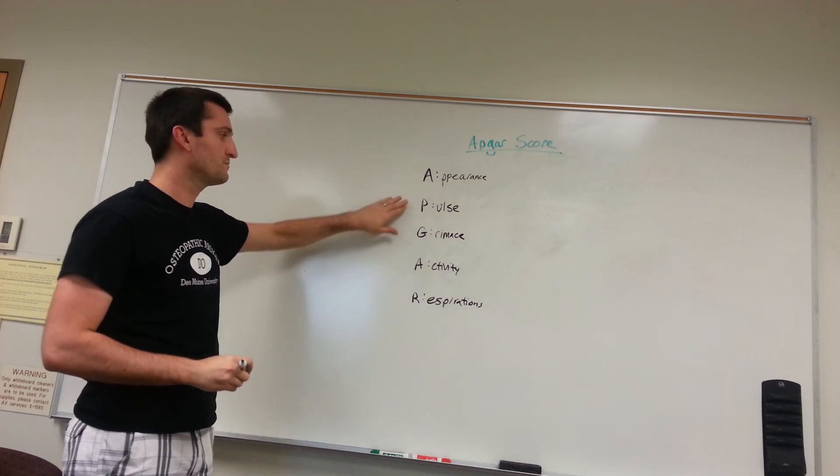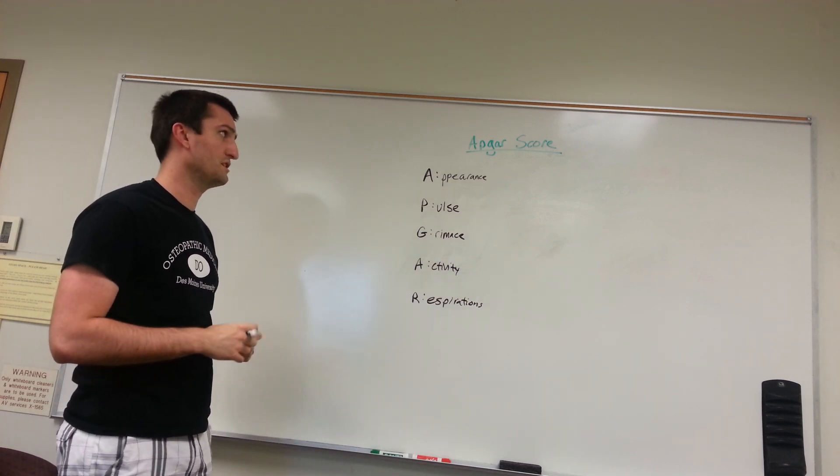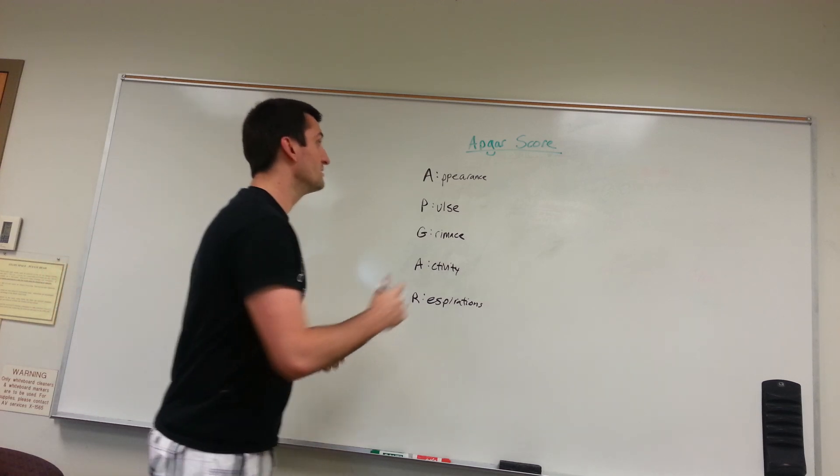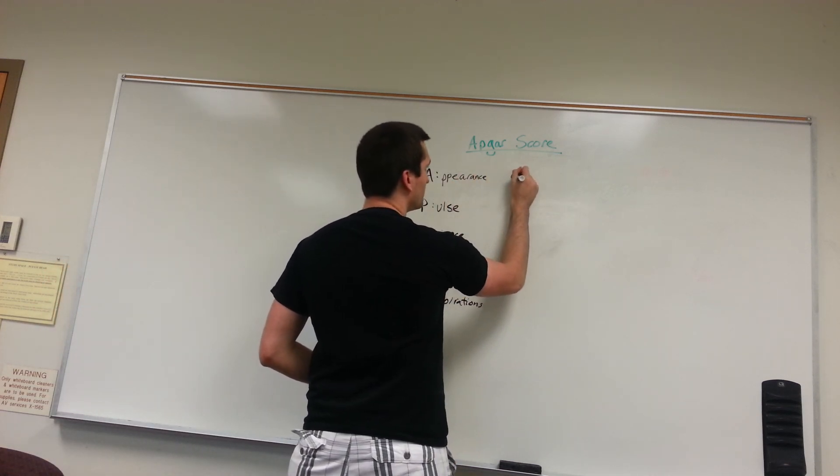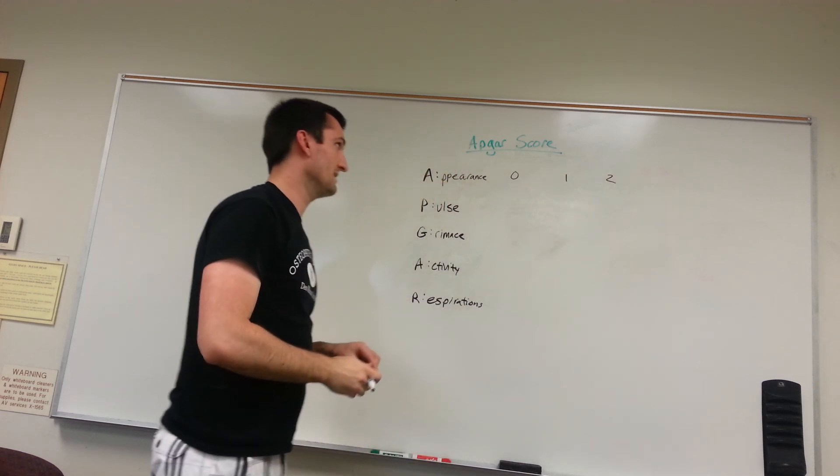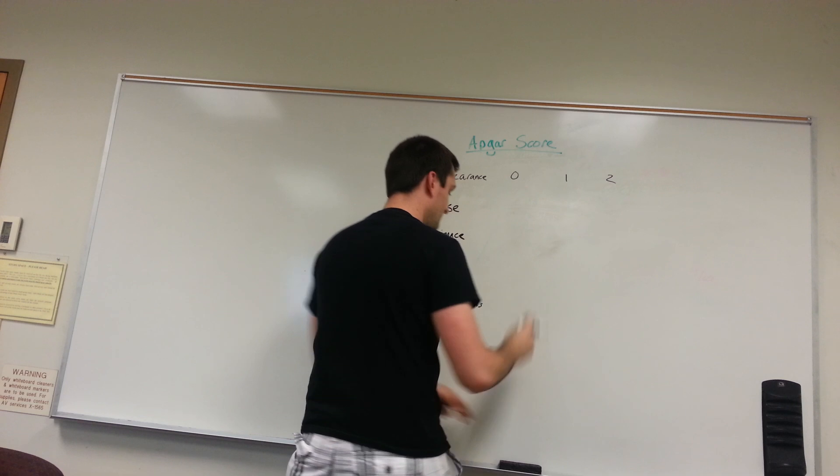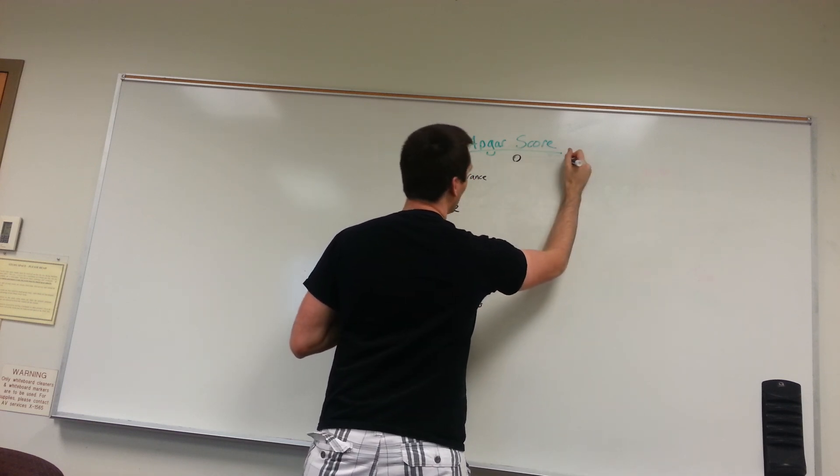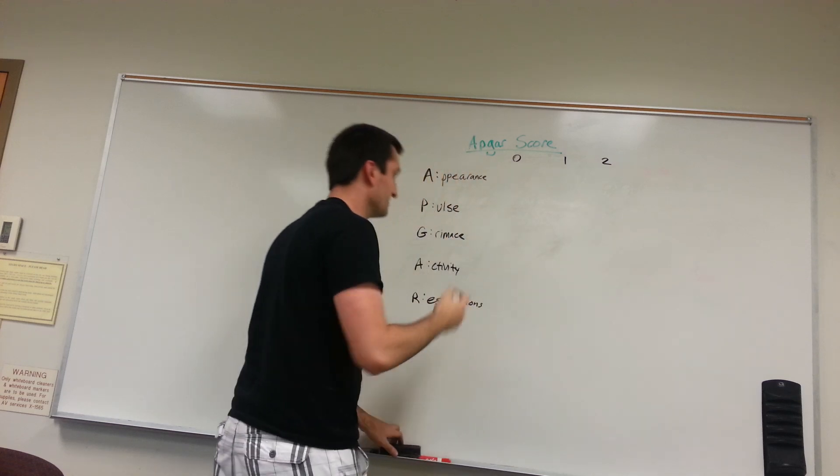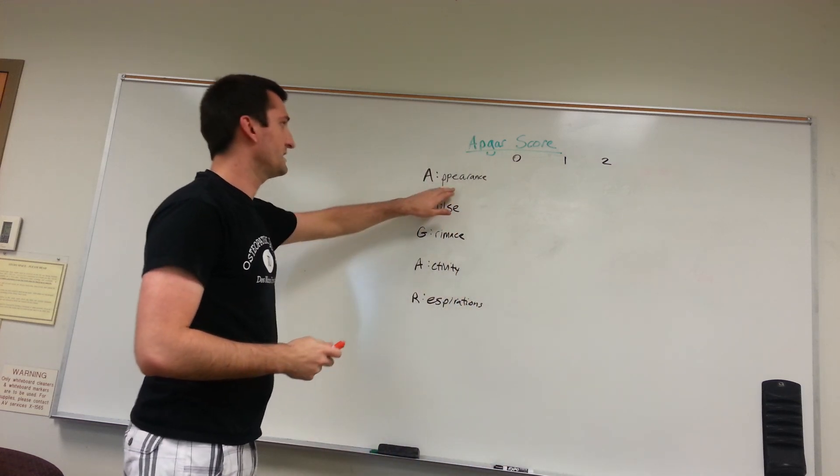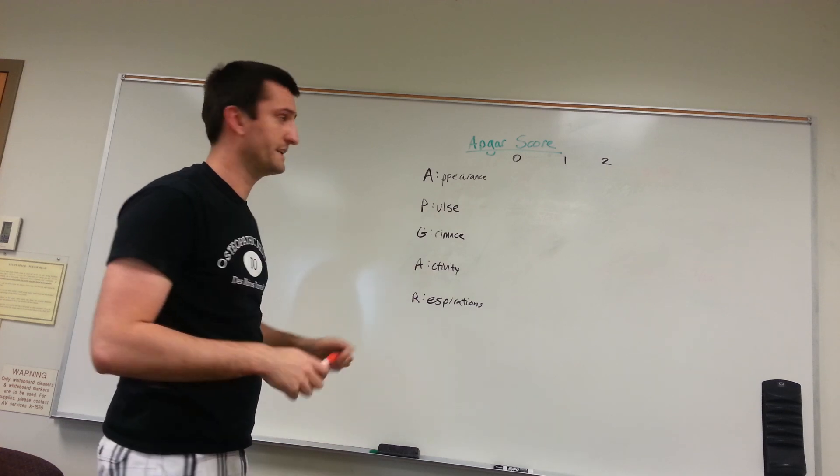Alright, so this is what APGAR stands for: appearance, pulse, grimace, activity, and respirations. And I said that there's a total score of 10. So, for each category, you have a 0, a 1, and a 2 score possible. So, for each category, let me quickly go through what each scoring criteria is.